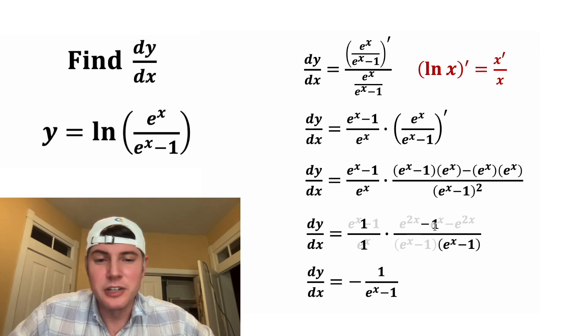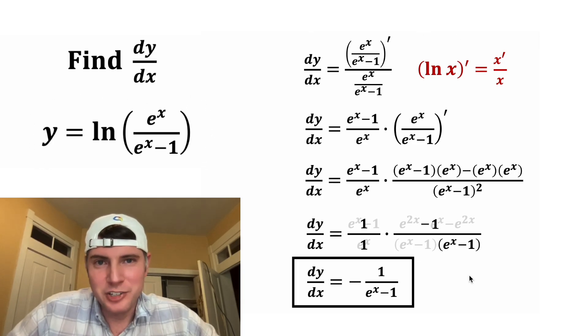Now we have our dy/dx. It's equal to negative 1 over e to the x minus 1. And that's the answer to our question. That is the derivative of this function right here. So let's put a box around it.